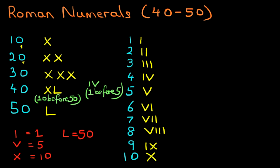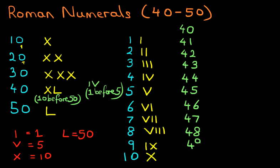We're now going to do the numbers 40 to 50. So we're going to start at the top over here. We're going to write down 40, and then 41, and we keep going through 45, 46, 47, 48, 49, and 50. So those are the numbers we want to write in Roman numerals.